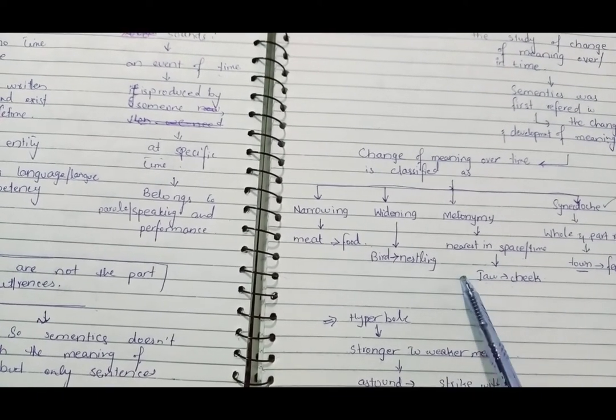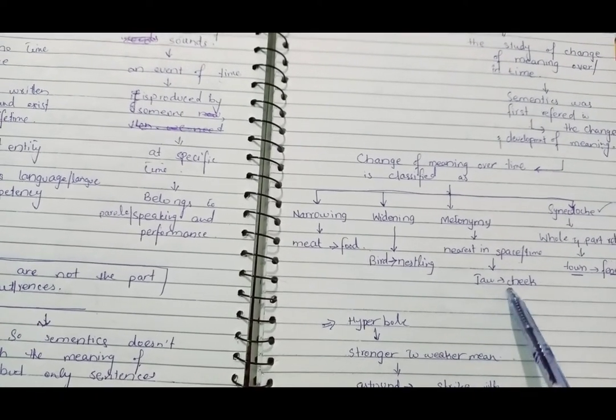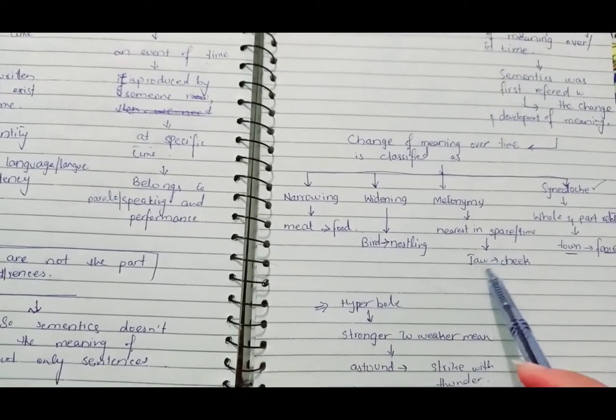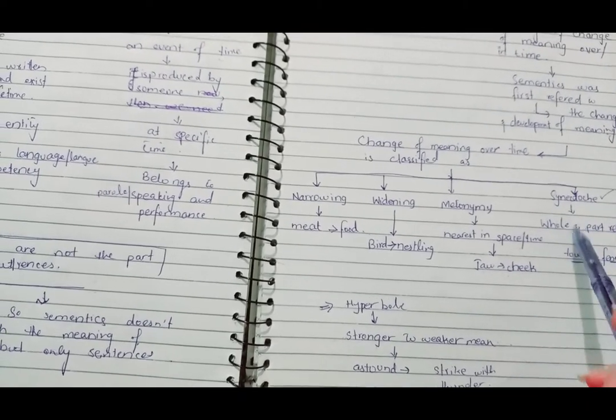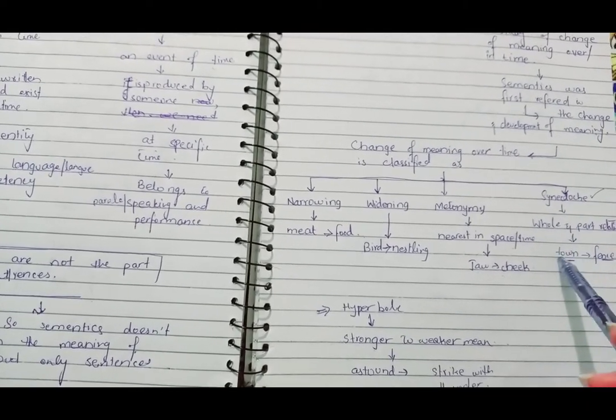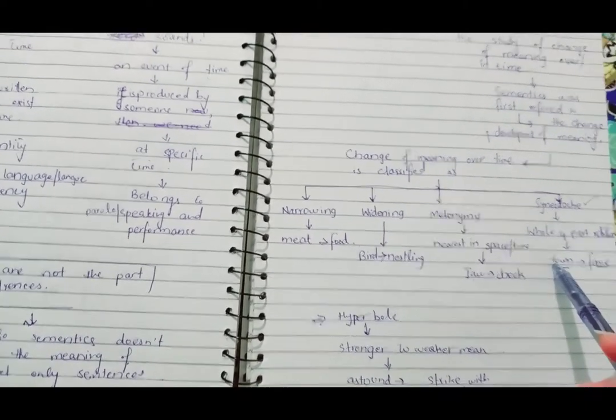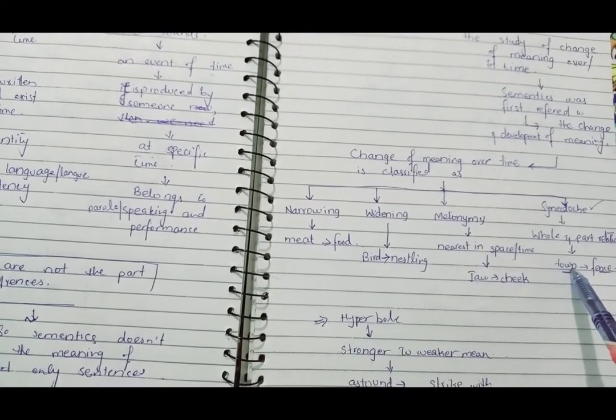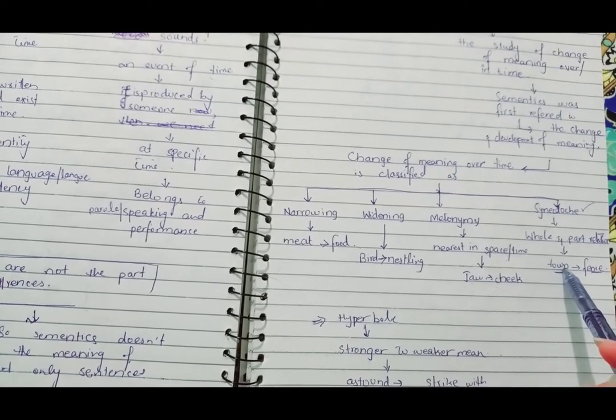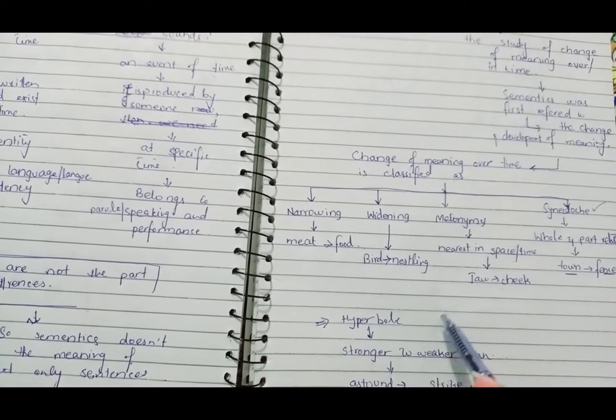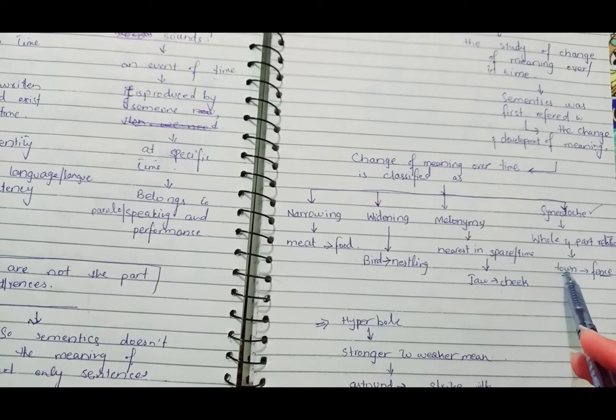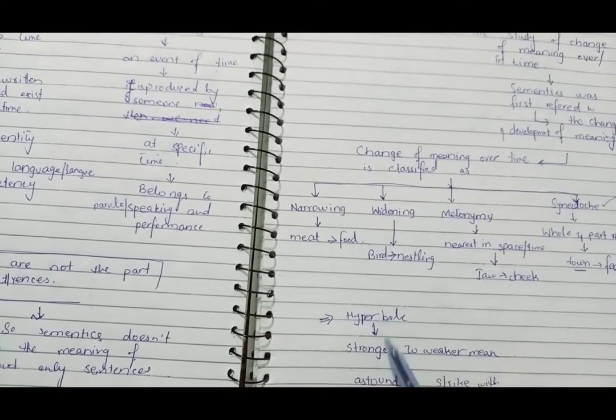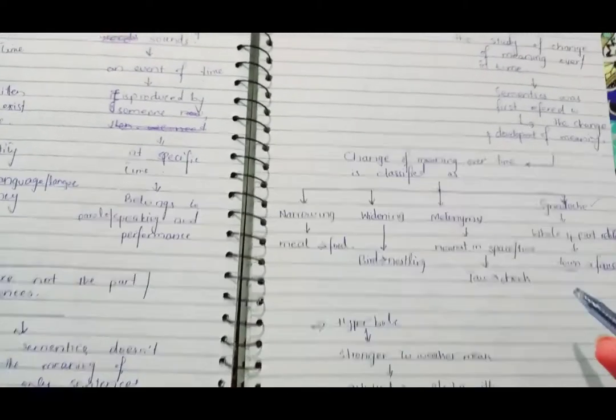For example, jaw: jaw means jawbone. If we look at jaw, jaw's closest is what? Cheek. So we have nearest in the space. The relationship between leg and chair is synecdoche because it is the relationship of whole and the part. Hyperbole: stronger to weaker meaning.